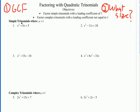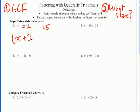Number one: look for a GCF — there is none. It's a trinomial, and it's a simple trinomial because the leading coefficient is 1. So I'm going to try to find two factors of C that add to B. What two numbers multiply to positive 5 and also add to 6? Because they multiply to be positive, they have to be the same sign — either both positive or both negative. But since they also add to positive B, they must both be positive. So what two factors of positive 5 add to positive 6? That's 1 and 5. Simple trinomials are called simple because once you find those, you just get (x + 1)(x + 5).